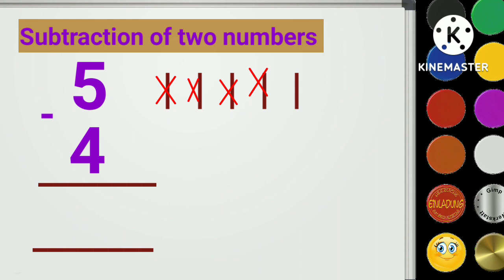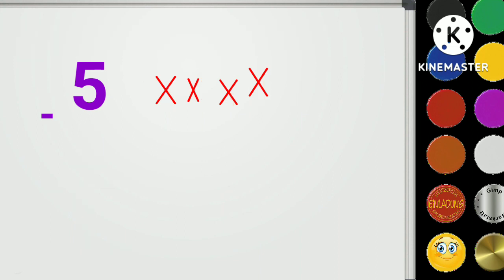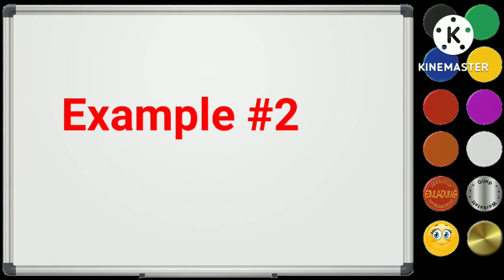Now we will count the remaining line. 1. 1 is left. 5 minus 4 is equal to 1.